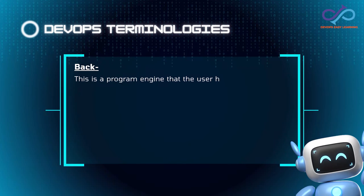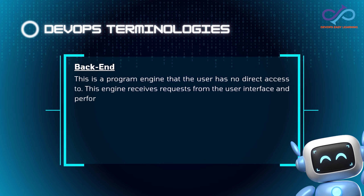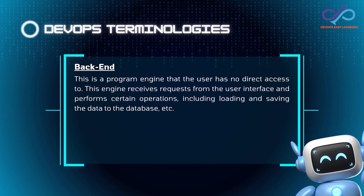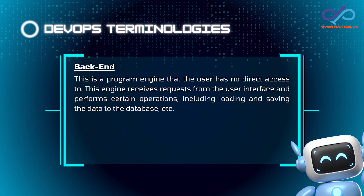Next is Backend. This is a program engine that the user has no direct access to. This engine receives requests from the user interface and performs certain operations, including loading and saving the data to the database.